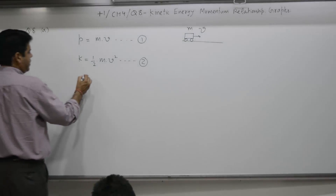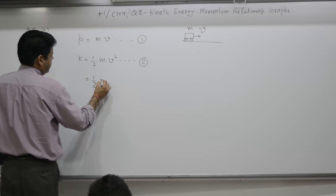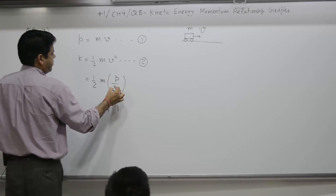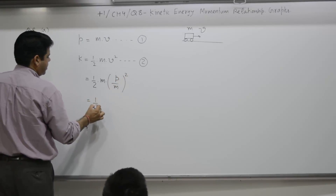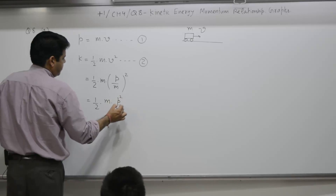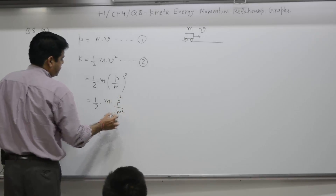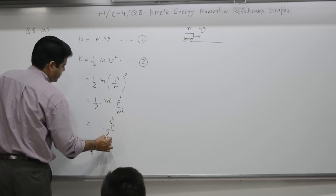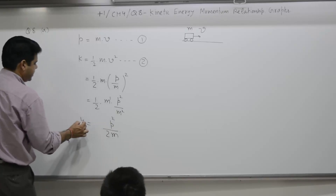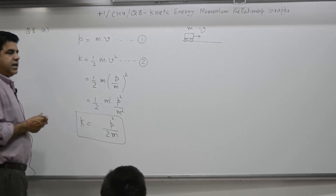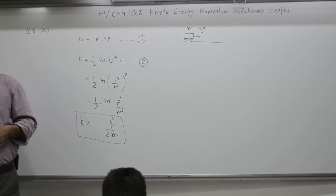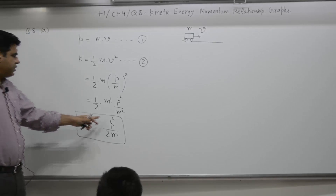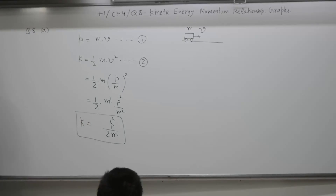Taking the value of v from the momentum equation and substituting: K = ½m·(p/m)² = ½m·p²/m² = p²/2m. So kinetic energy is equal to p²/2m. No doubt kinetic energy is also equal to ½mv², but in terms of p and m it is p²/2m. Derivation completed.